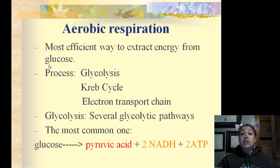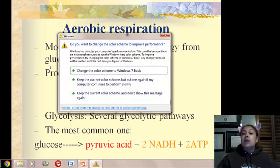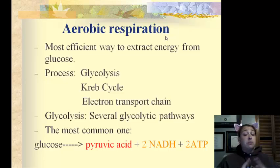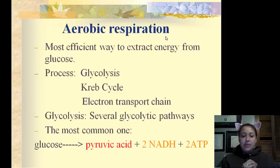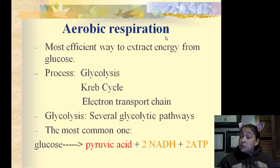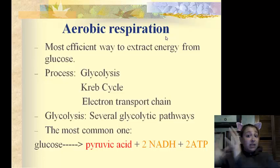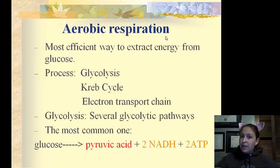Aerobic respiration is the most efficient way to actually get energy from glucose. We go through three processes: glycolysis, which is the breaking of glucose; the Krebs cycle; and then our electron transport chain. We've seen this electron transport chain before — remember when the electrons got excited and bounced around from electron acceptors? Every time they did, they pumped out hydrogen, and the hydrogen could come back in. We will see that again in aerobic respiration.